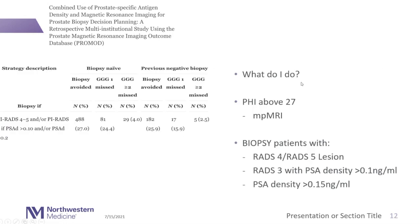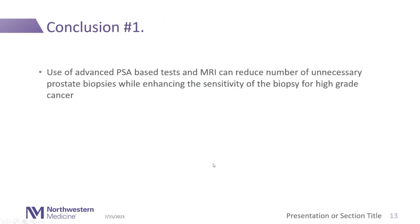In my practice: if PHI is above 27, I recommend multi-parametric MRI — though perhaps we should consider biparametric, which is faster with less potential toxicity. Individuals with RADS-3, 4, or 5 get a biopsy. If PSA density is more than 0.15, I recommend a biopsy even if MRI is negative. That's the approach Ashley and I have published on.